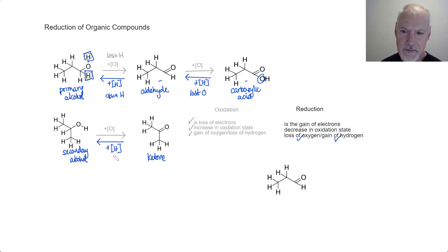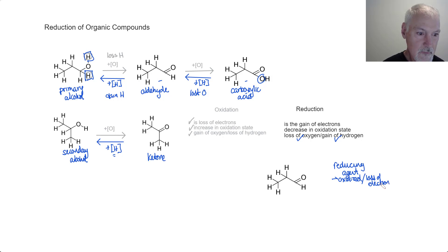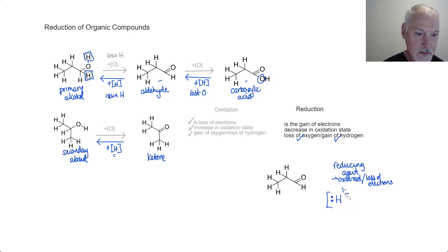Now, what are some of the properties of this reducing agent? Let's look at them briefly. Remember that a reducing agent is itself oxidized, which means it's got to lose electrons. So we're looking for something that has electrons it can get rid of. A good candidate for that is the hydride ion — hydrogen possessing a minus one charge — meaning it has one more electron than hydrogen. And there would be its Lewis structure.